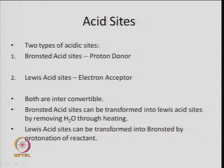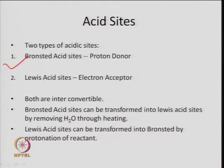Both phenomena are very important in zeolite material. There are basically two types of sites: Brønsted acid sites which can donate a proton, and Lewis acid sites which can accept an electron. Aluminum in the framework, which has electronegativity, provides Lewis acidity in the catalyst, and the proton H⁺ present in the zeolite framework provides Brønsted type acidity.